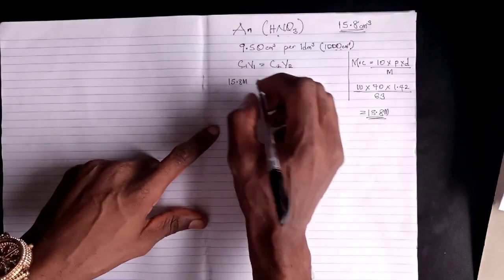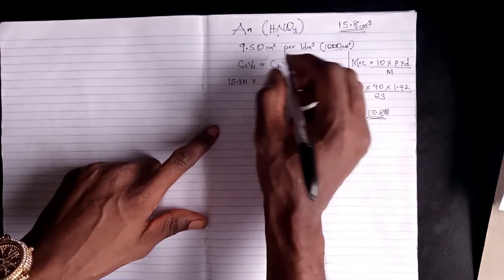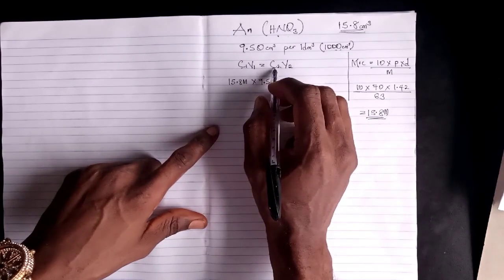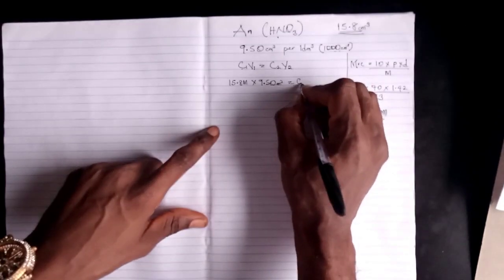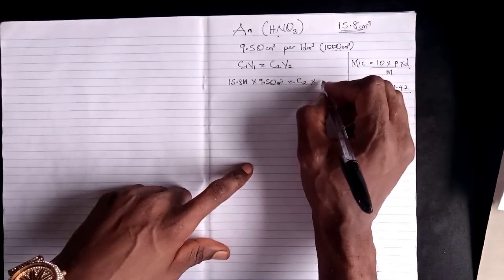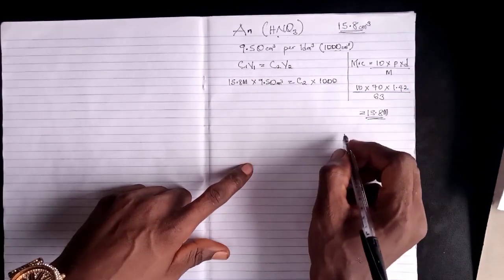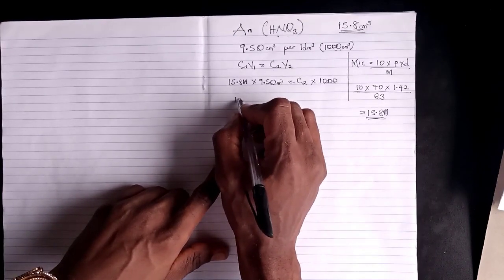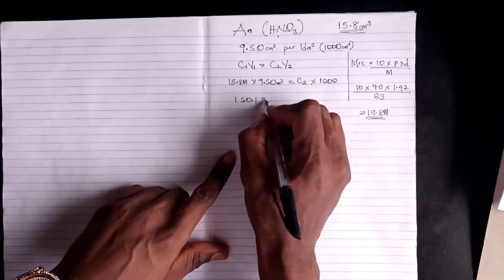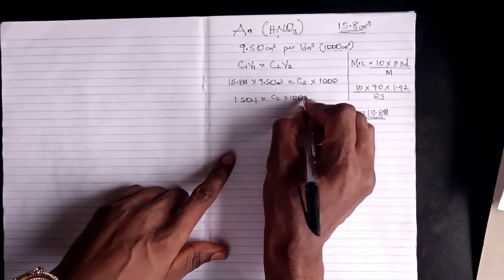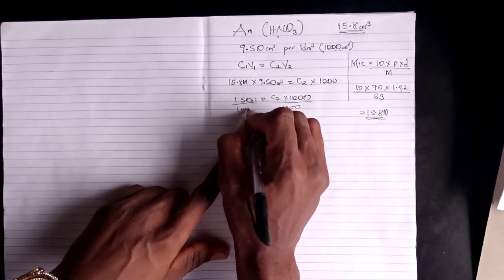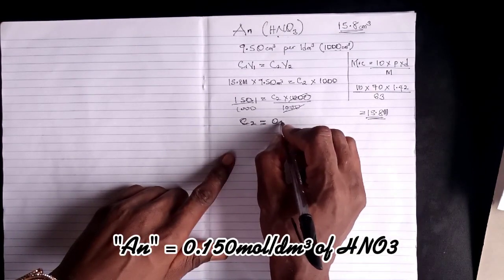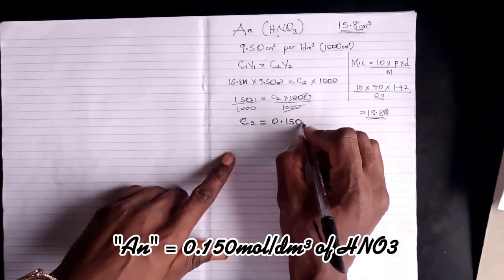So C₁ is 15.8 mol/dm³. Using C₁V₁ = C₂V₂: C₁ is 15.8, V₁ is 9.50 cm³, C₂ is what we are looking for, and V₂ is the final volume of 1000 cm³. Multiplying gives 150.1 = C₂ × 1000. Dividing both sides by 1000, the concentration of our nitric acid solution is 0.150 mol/dm³.